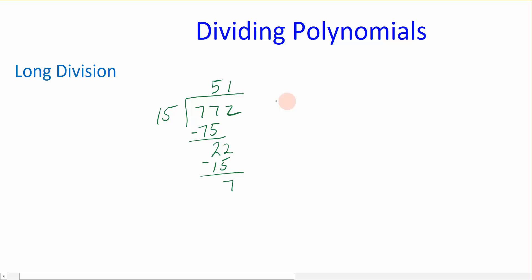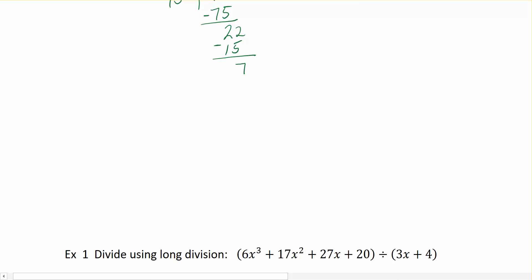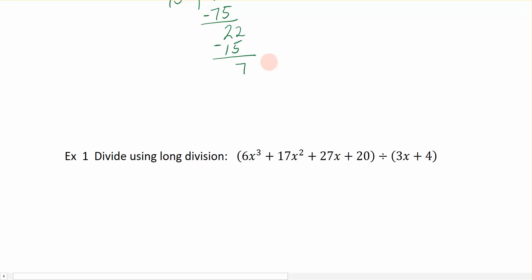Subtract, and I'm left with 7. Now I don't have anything else out here, I don't have any decimals, so we're going to write this as the remainder. The remainder is 7, and I'm going to write that as a fraction 7 over 15. This is how we did long division a long time ago, and it's the same process we're going to use for this next example.